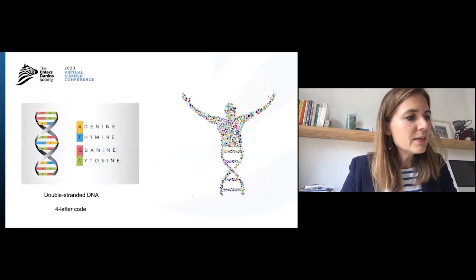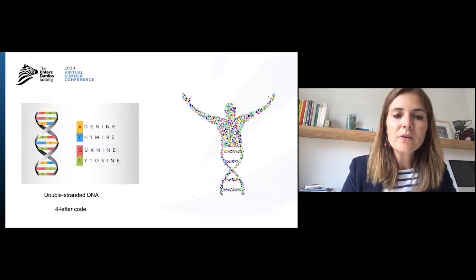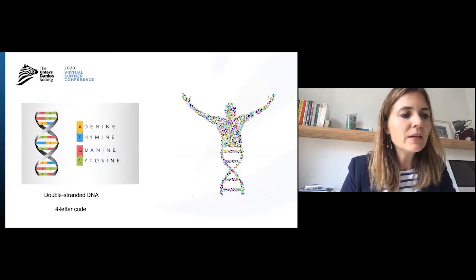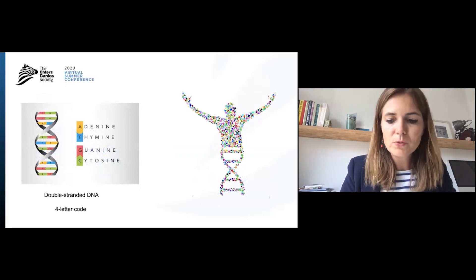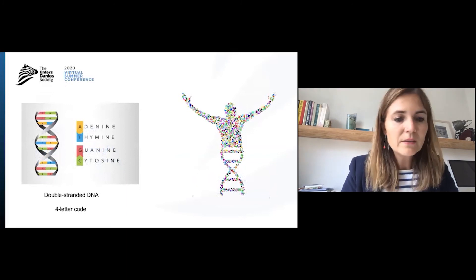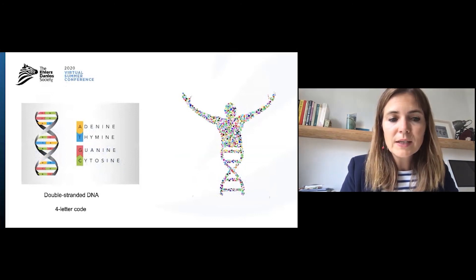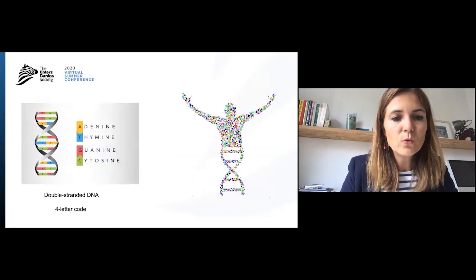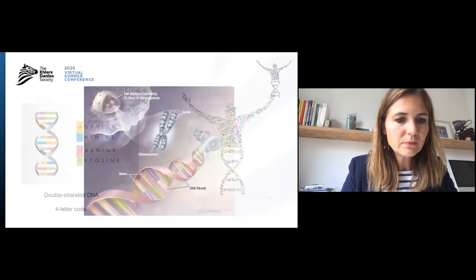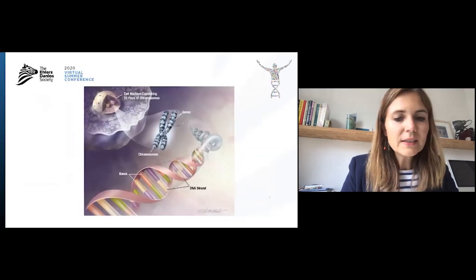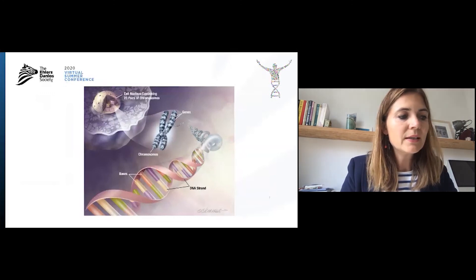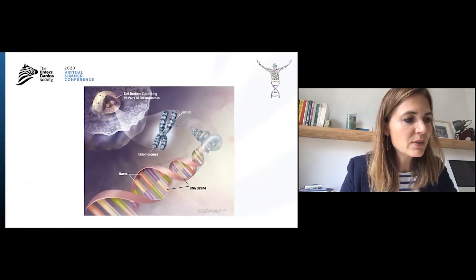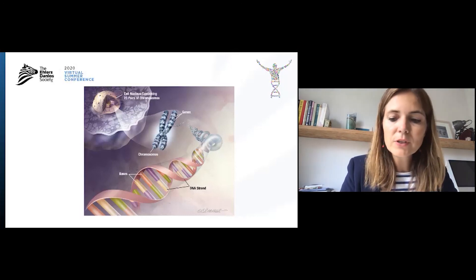Our DNA is a molecule that contains our hereditary material, and thus the biological instructions that make each species and each individual unique. It consists of a four-letter code: A for adenine, T for thymine, G for guanine, and C for cytosine. Our DNA is present in each cell of our body and is organized on chromosomes, and each of our cells, except for the egg and sperm cells, contain 46 chromosomes.